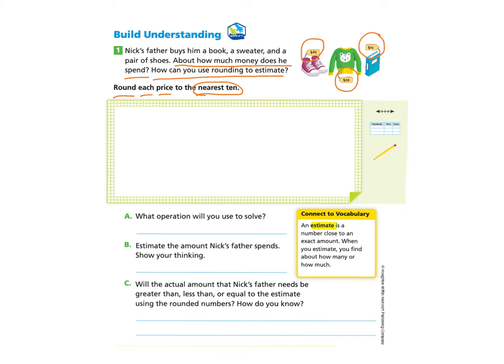It's important to notice that they're asking about how much. They're not asking for exactly. When they want exactly, they'll say how much. But when they use the word 'about,' that's telling us that we can estimate. And specifically, they're telling us we can use rounding to estimate.